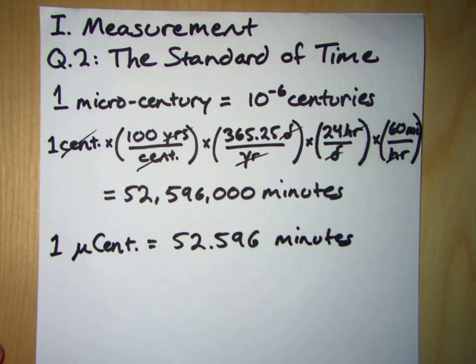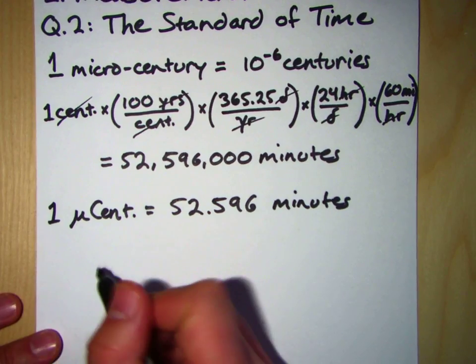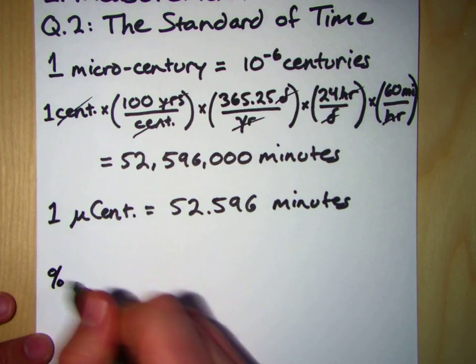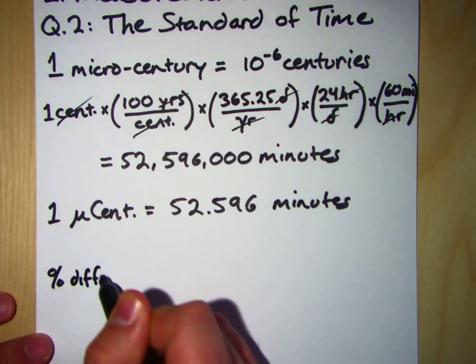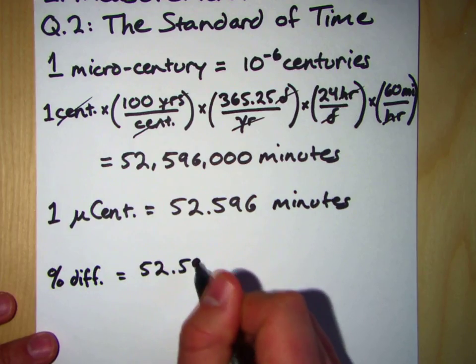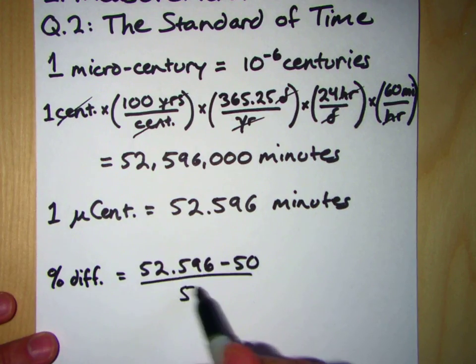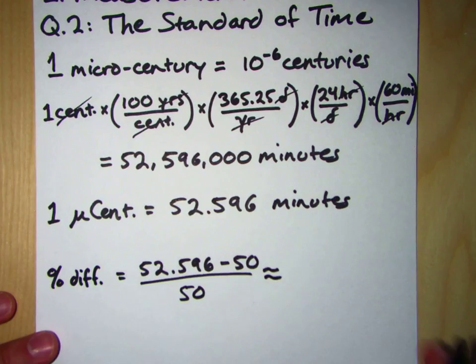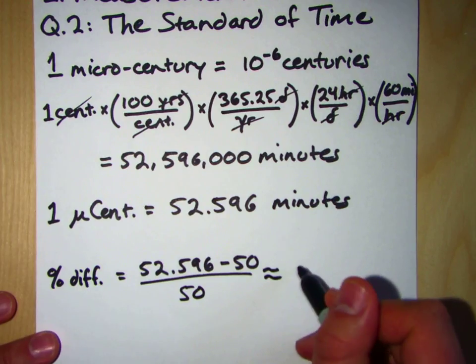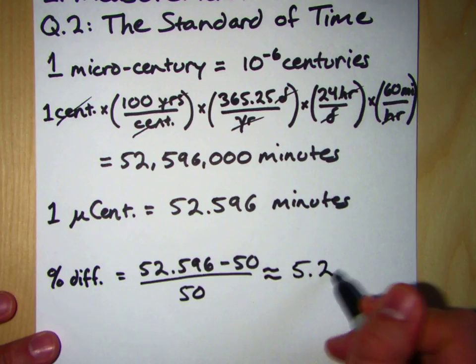That's pretty close to 50 minutes, like Enrico Fermi estimated. How far off is this number from the estimate? And we have to be careful because that's what they ask for. They ask, what is the percent difference from Fermi's approximation? So we're going to take 52.596 minus 50, divided by 50, and this should give us about, what does this come up to be? This comes to about 5.052 or 5.2 percent.